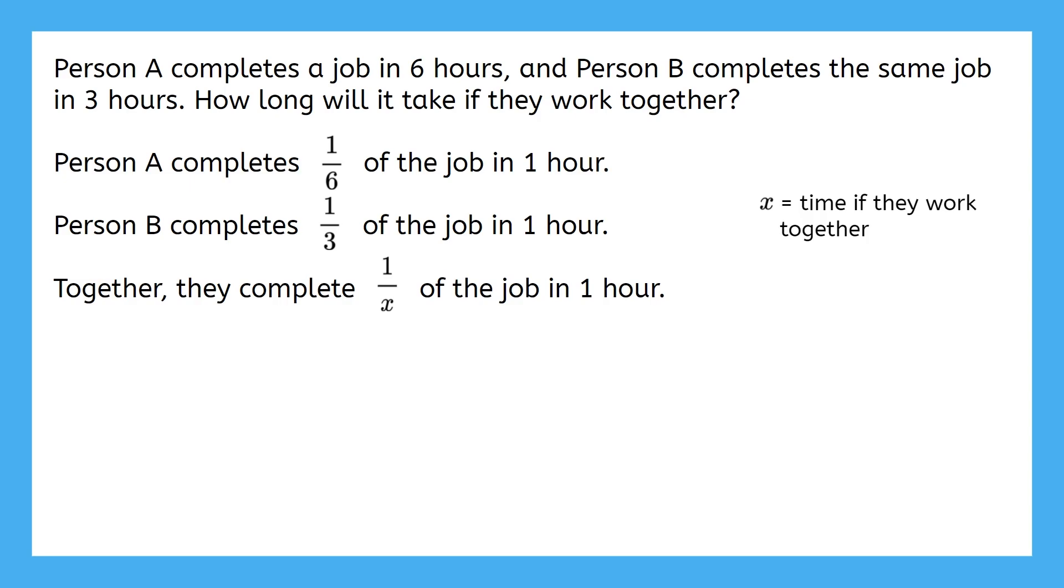Also, together does tend to mean add. So, if we add person A's rate and person B's rate together, we'll find out how much of the job they can do in one hour. That's where we get our equation. This is the kind of equation we're going to be working with in this lesson.